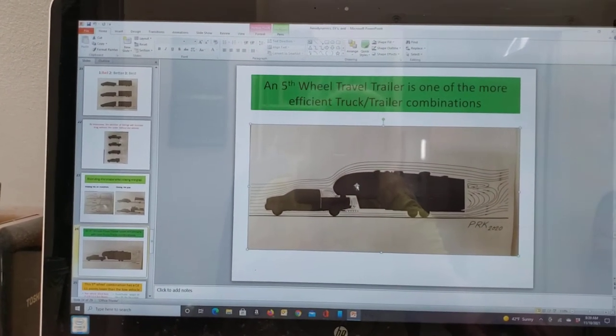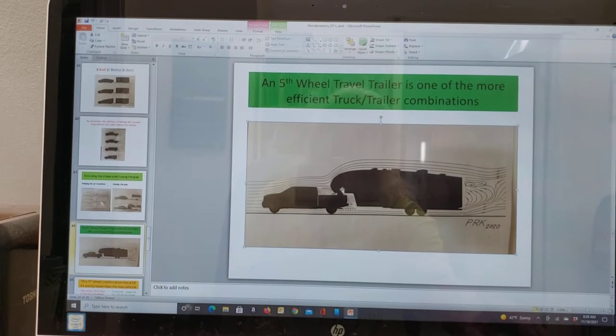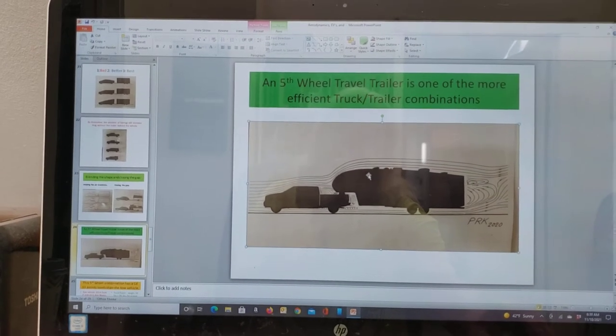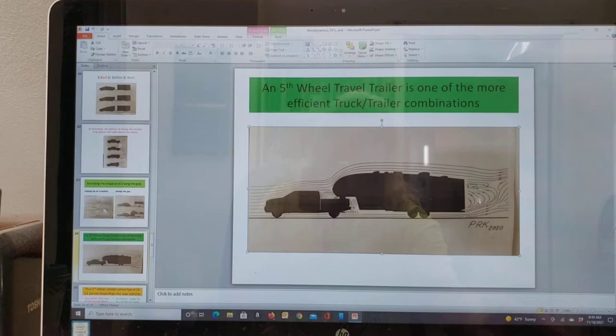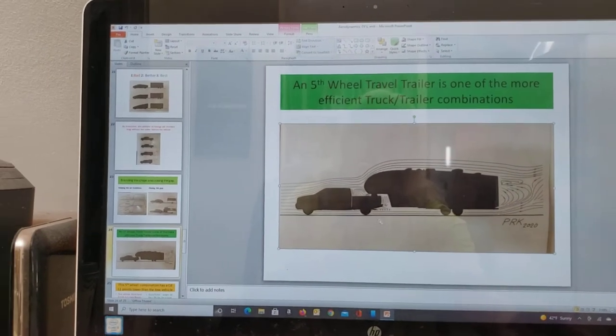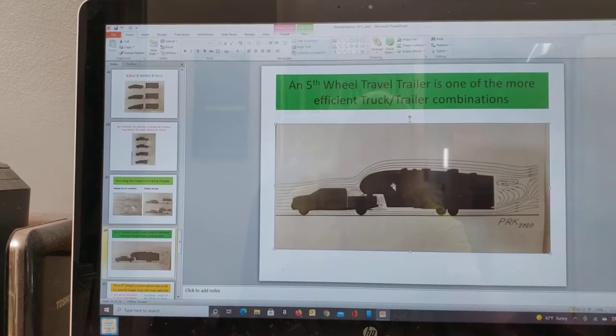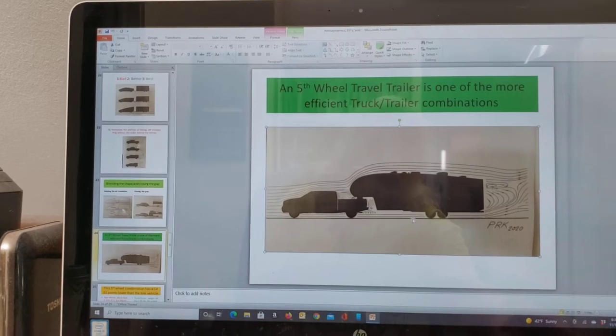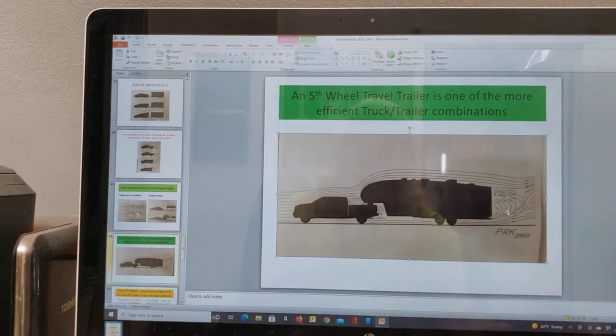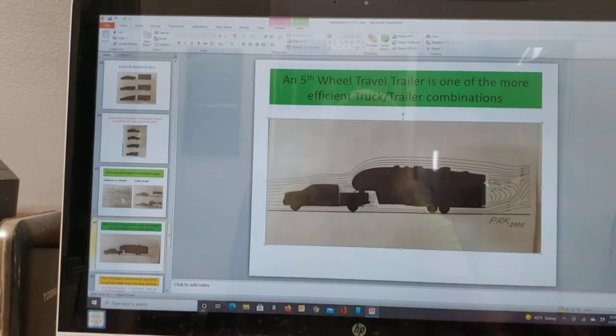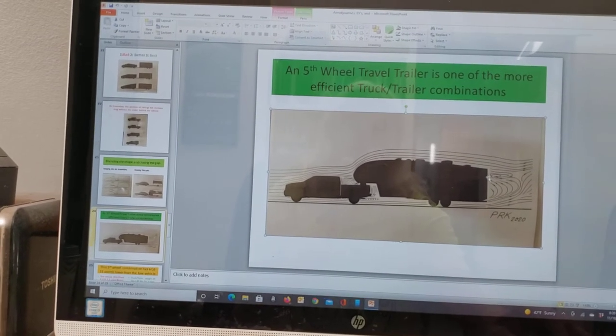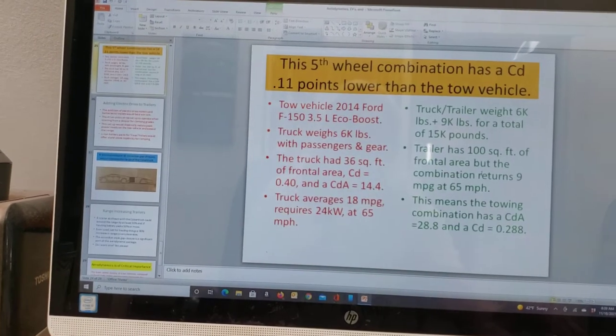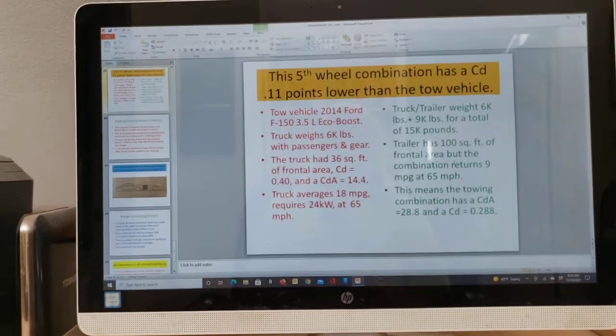Because of this gap closure, and another thing you'll see on a lot of fifth wheel trailers is the roof line slopes downhill. On my trailer, for example, I have 100 square feet of frontal area but I only have 64 square feet of wake area.